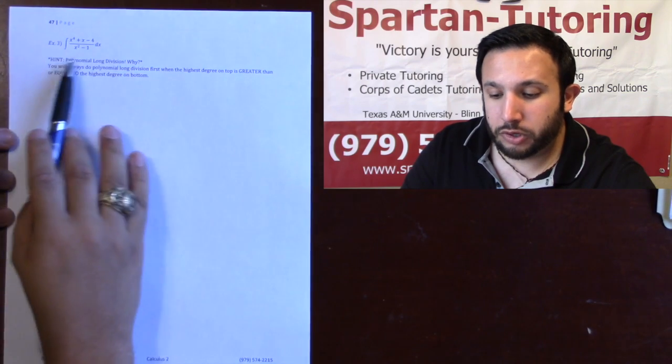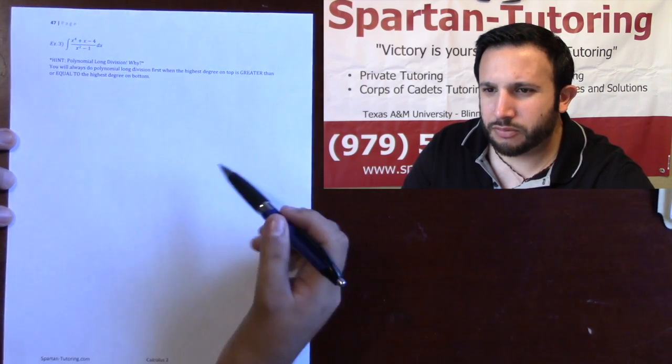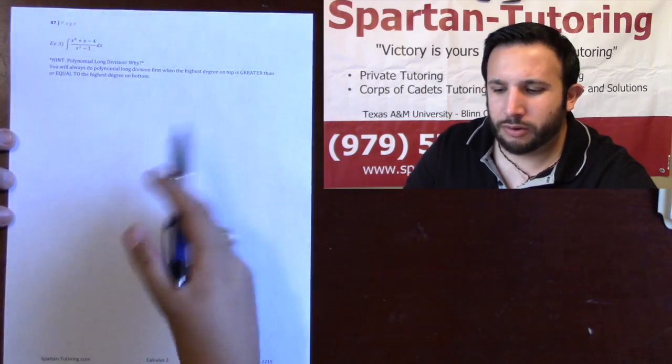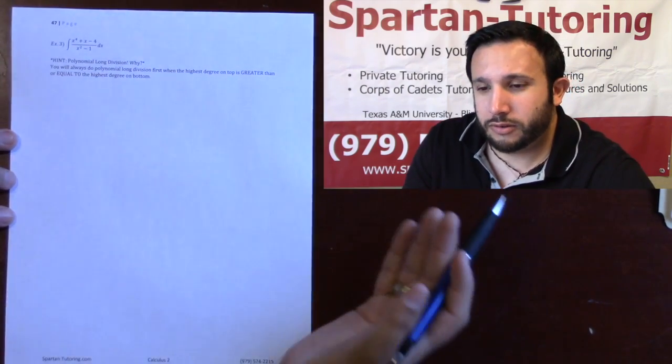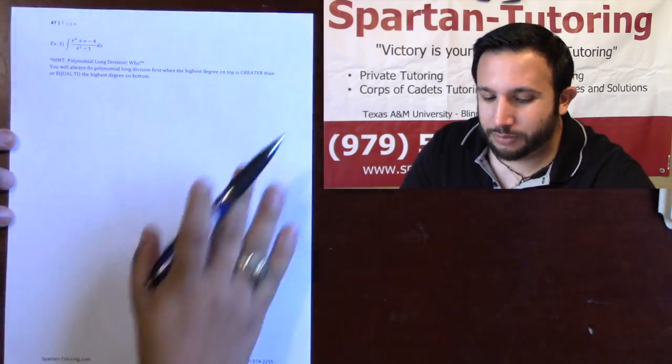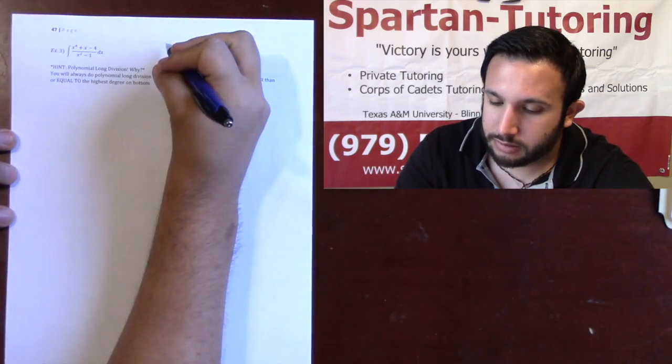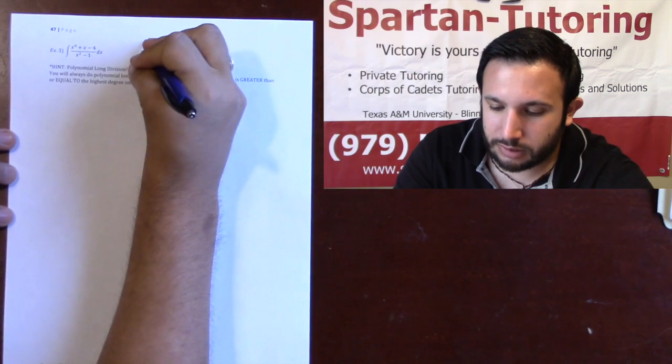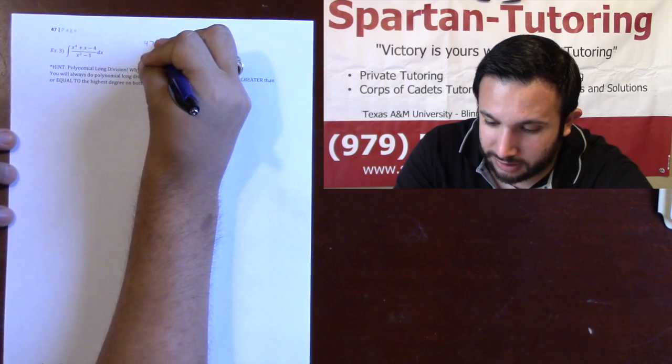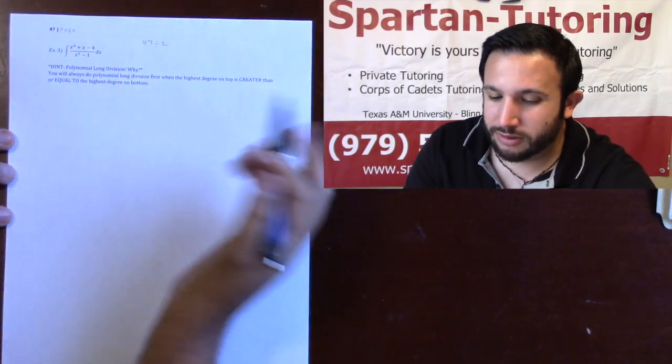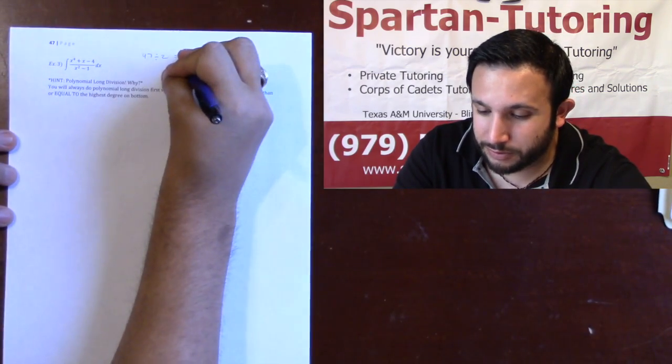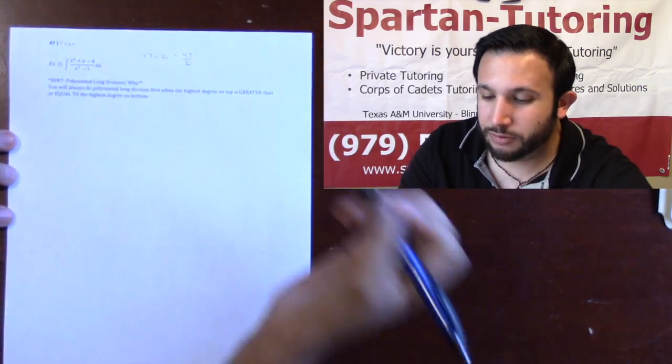Now, before we do polynomial long division, let's take a trip back to what, 3rd grade, 4th grade, 2nd grade, whenever we did regular long division. Those were good times. I had a pretty good elementary, not going to lie. So, let's say I wanted to do, I don't know, let's do 47 divided by 2. When was the last time you saw that division symbol? That's been forever, right? You've probably seen it's 47 over 2.